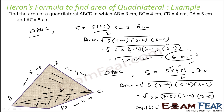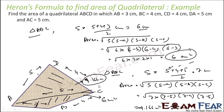So area of one triangle is 6 centimetre square and the other is 9.166 centimetre square. Total area will be 9.166 plus 6, that is 15.16 centimetre square.